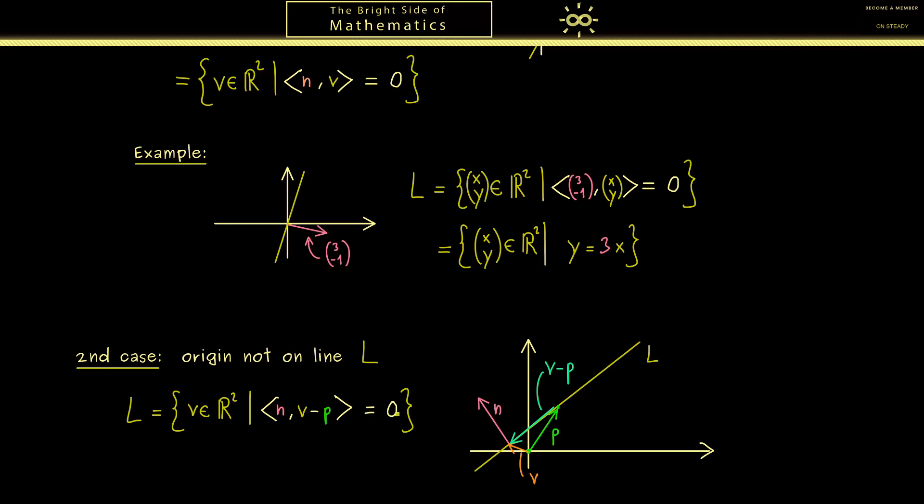However, as before, we can simplify this even more and maybe we use x and y again. So we have the set of all points x and y in R2. And then when we simplify the inner product, we have N1 times x plus N2 times y is equal to a constant we can call delta.